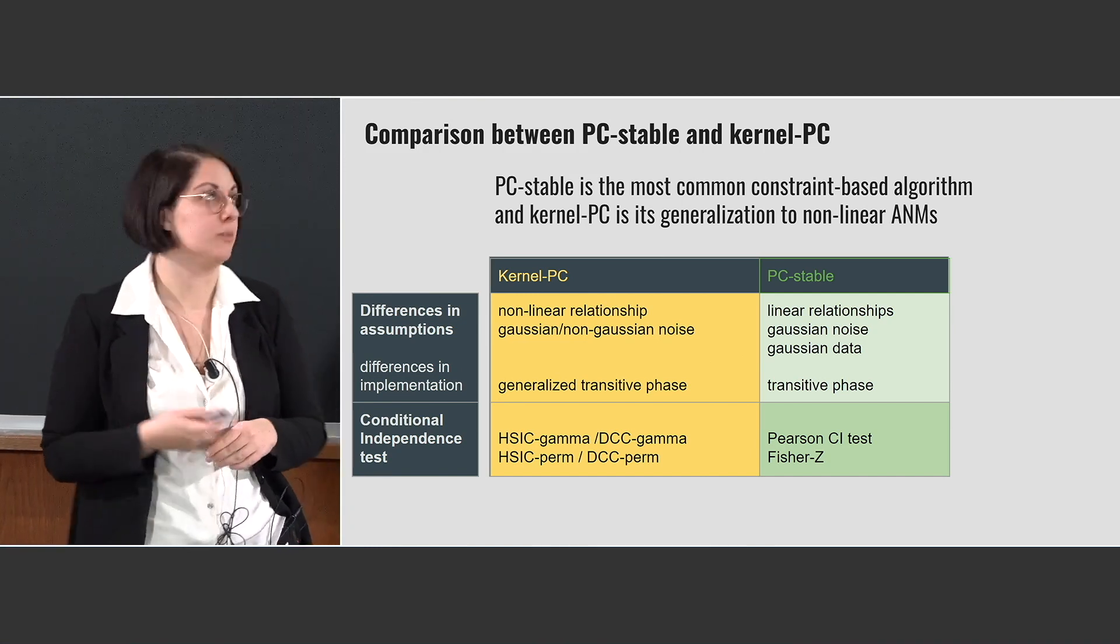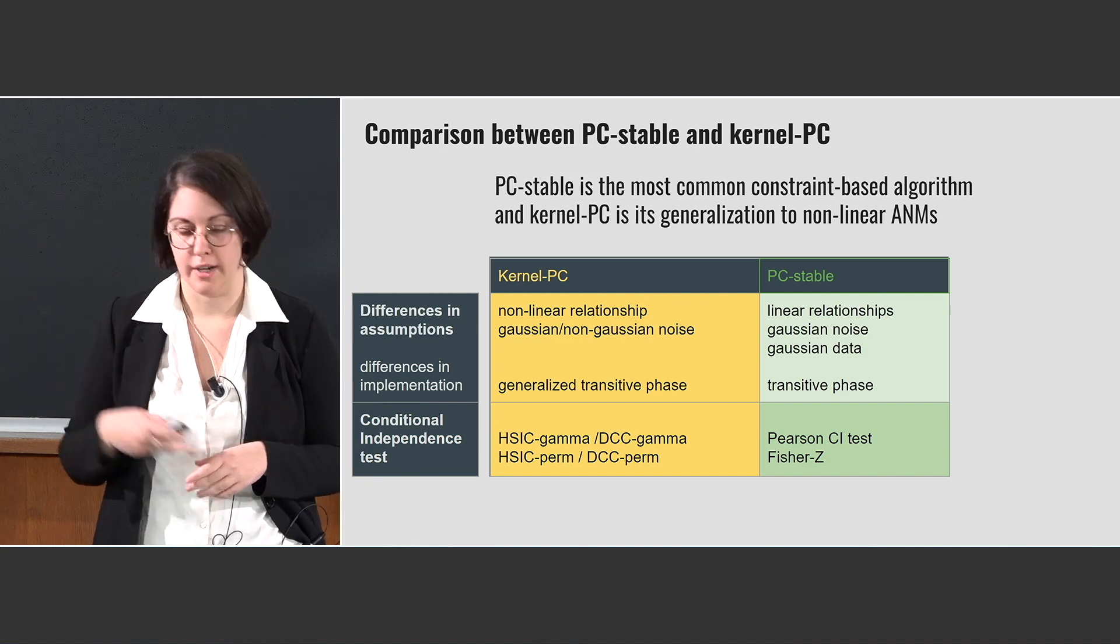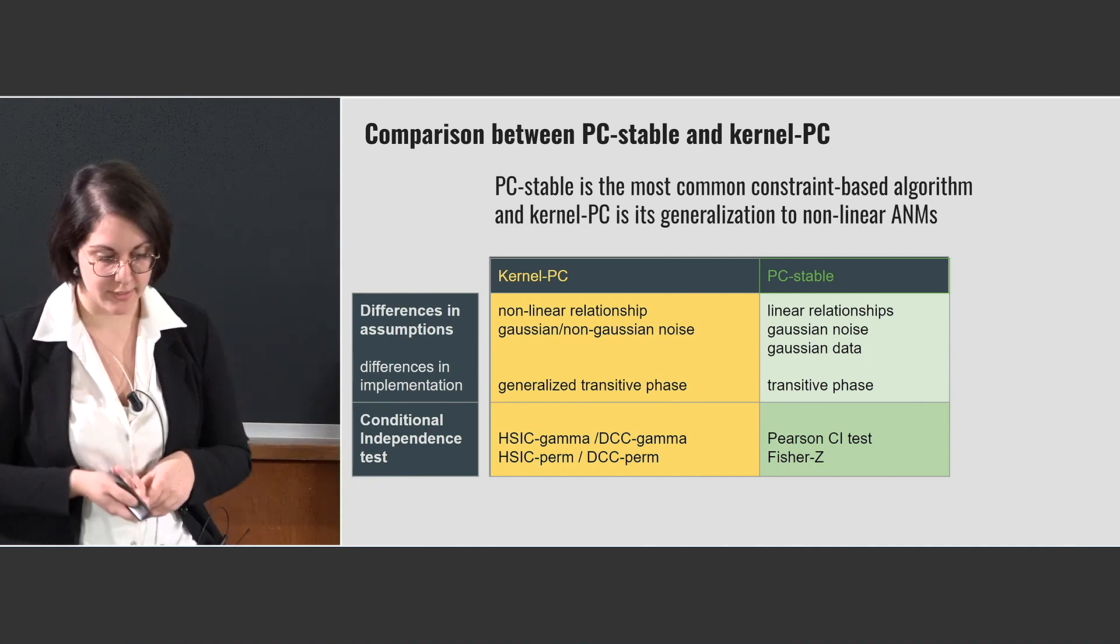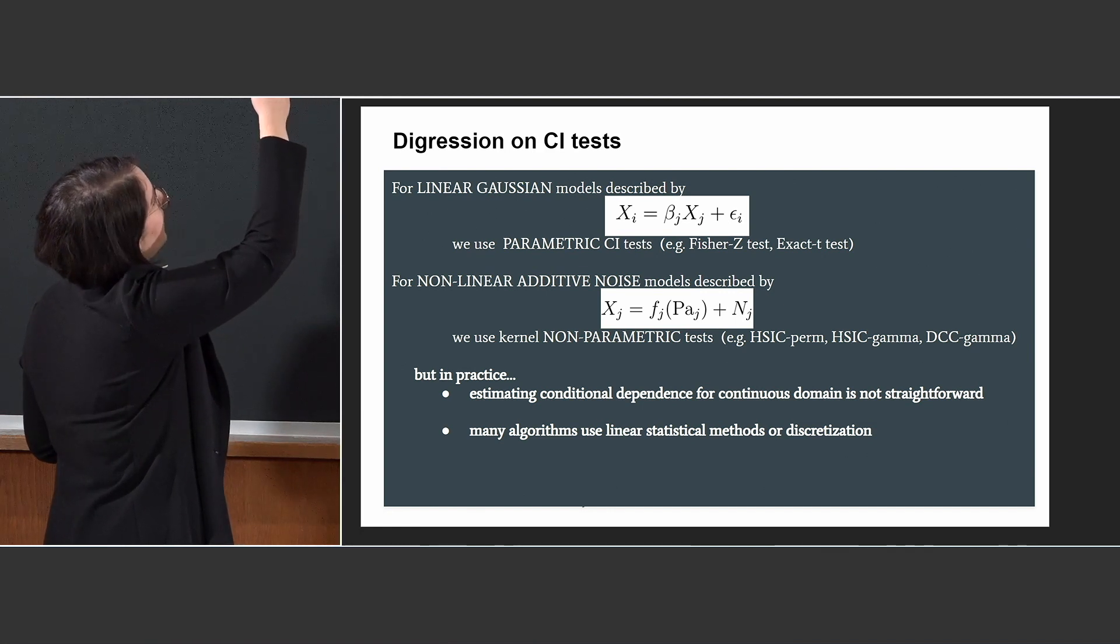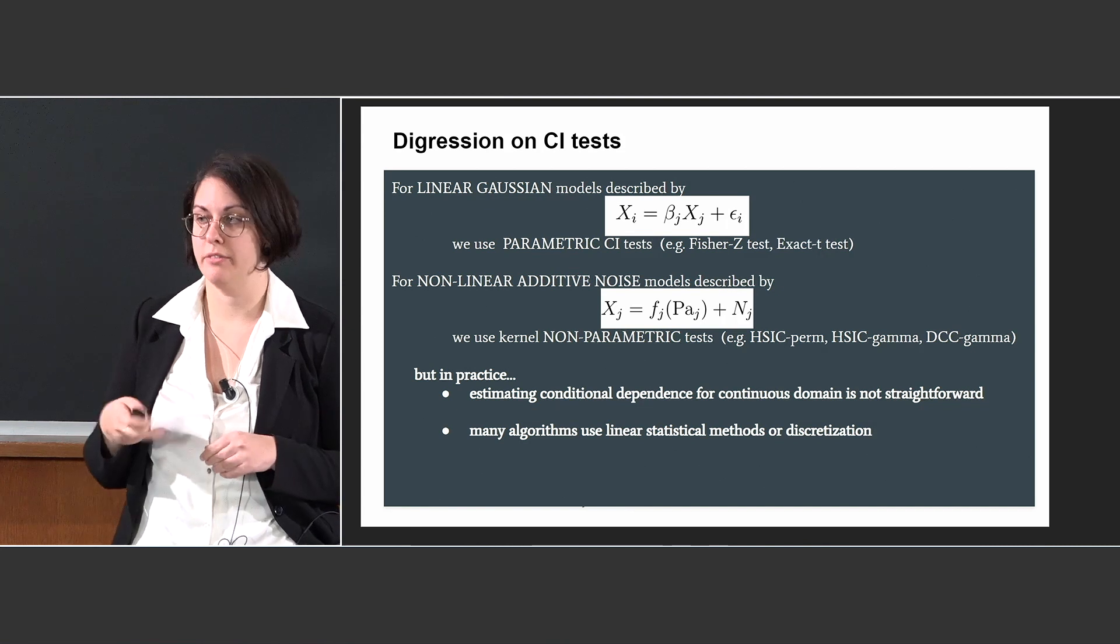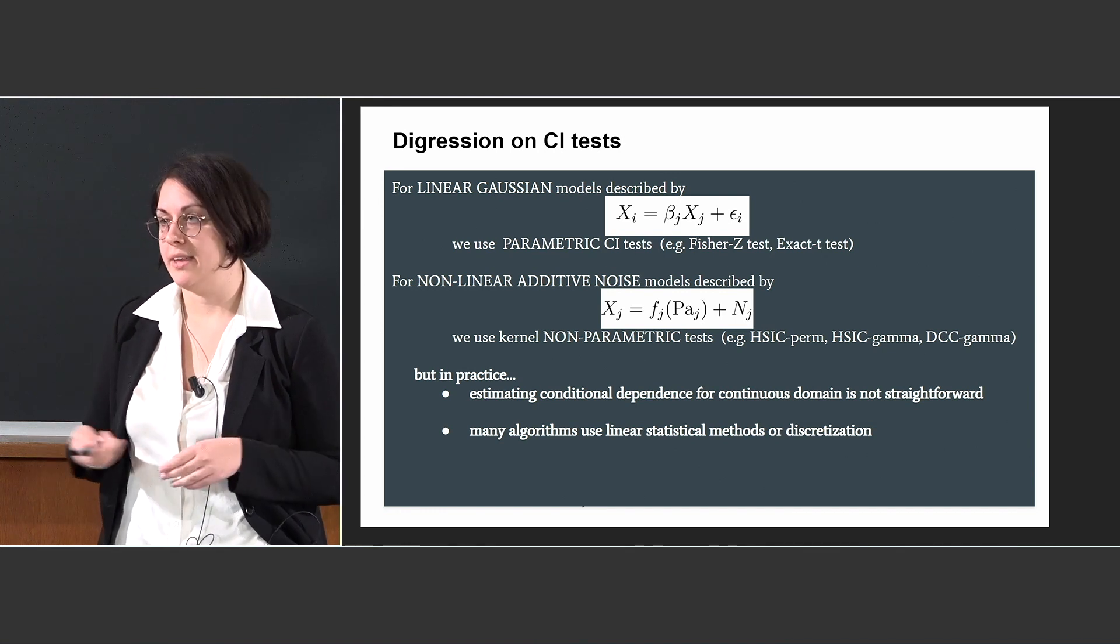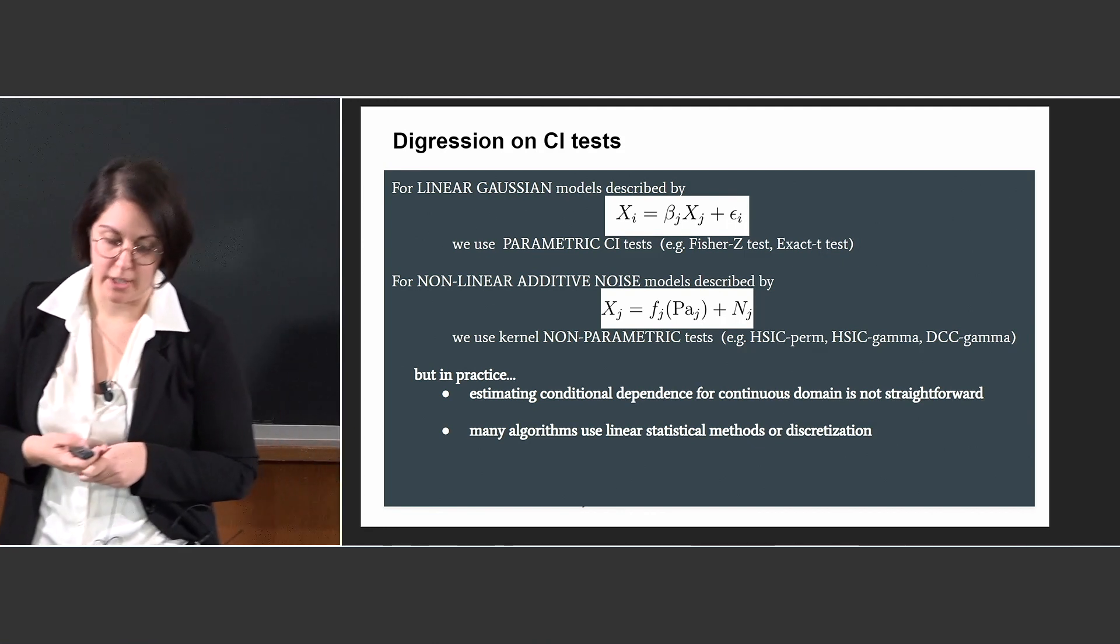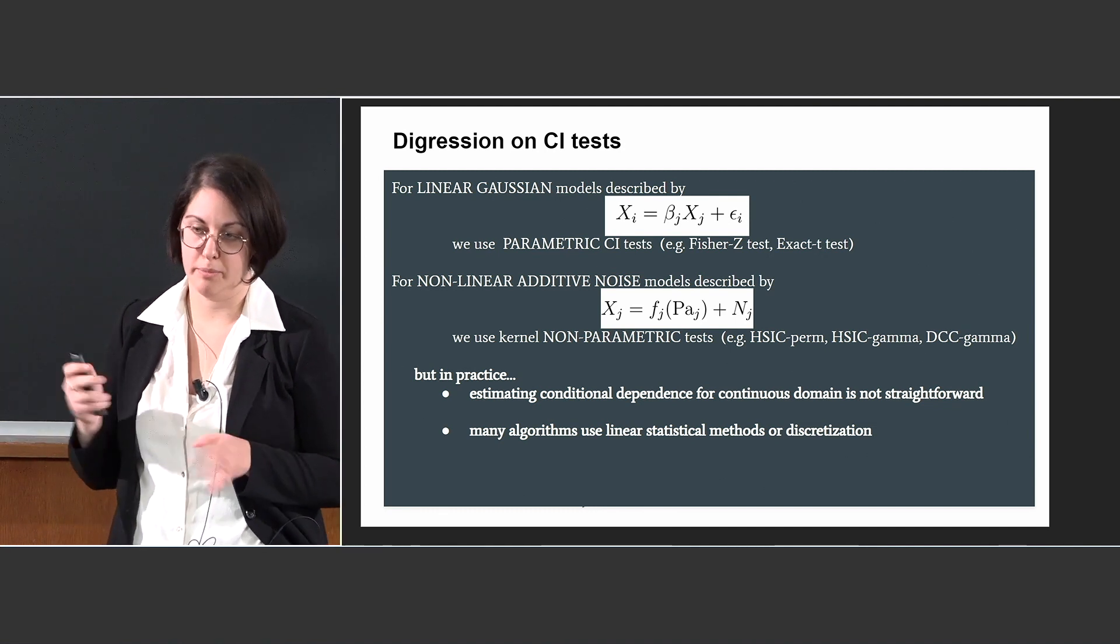The Kernel PC algorithm is made by kernel non-parametric conditional independence tests in which we test the conditional relationship using kernel methods and is made for non-linear additive noise models. In the sense here we have an example of the relationship where we can assume that the conditional relationship among XJ and its parents went through a non-linear function. So it is not the simpler case where we assume that we have additive Gaussian models and this case could have been treated by the PC algorithm.